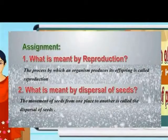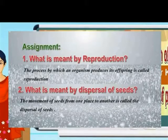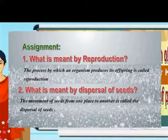5th Standard Science: Reproduction in Plants and Dispersal of Seeds. Question 1: What is meant by Reproduction? The process by which an organism produces its offspring is called reproduction.